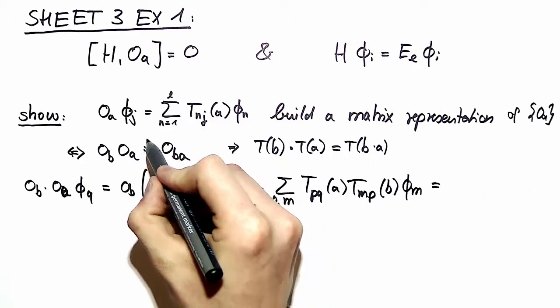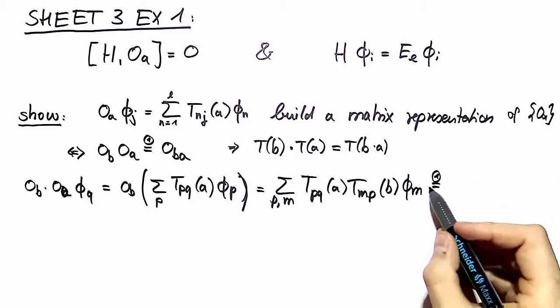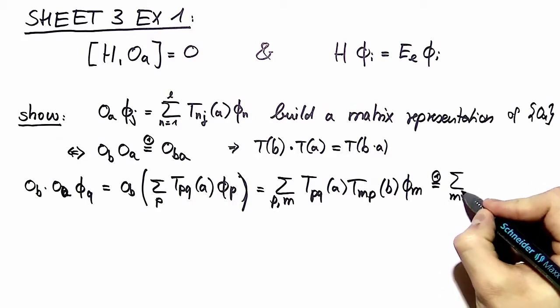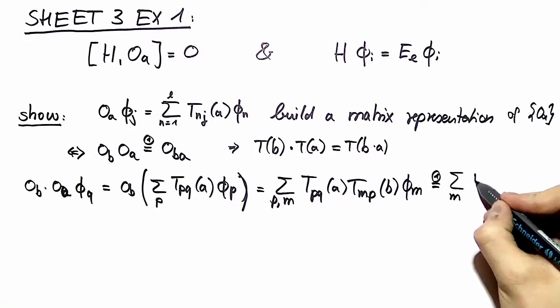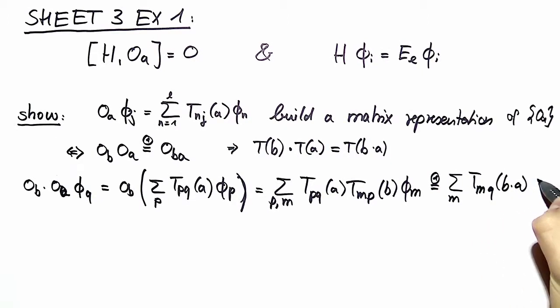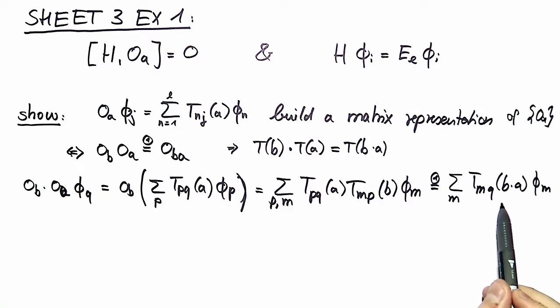If we call this requirement one, then by this requirement we have to have this being equal to a sum over M: T M Q B times A phi M. This requirement is true because if we insert B times A in our definition over here, we arrive at this condition.